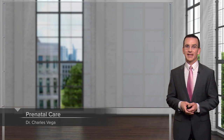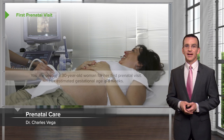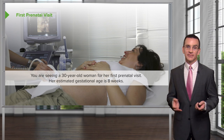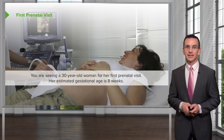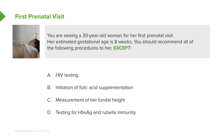We're going to discuss prenatal care in this module. We're going to start with a case. We have a 30-year-old woman here for her first prenatal visit. Her estimated gestational age is eight weeks. You should recommend all the following procedures to her except — which one should we not do at this time when she's eight weeks pregnant? HIV testing, initiation of folic acid supplementation, measurement of fundal height, or testing for hepatitis B surface antigen and rubella immunity?